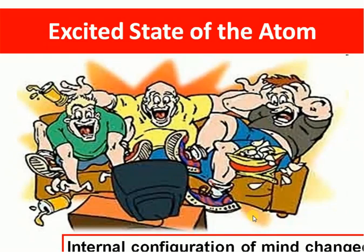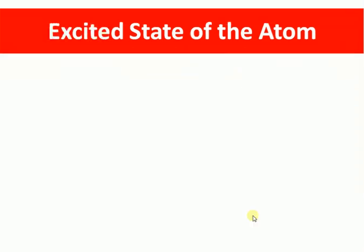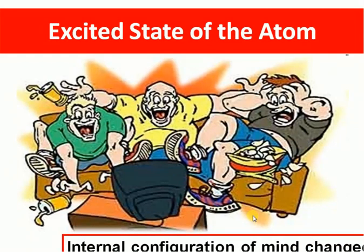This example illustrates the ground state and the excited state of the atom. In both pictures there are only the same three friends — no additional person. In the first picture they were in a stable form, with no excitement or activity in body or mind. But in the second picture, the internal configuration of the body has changed while the person remains the same.